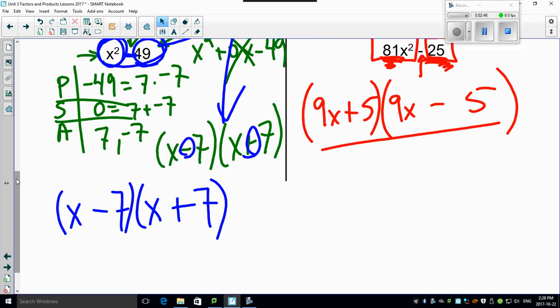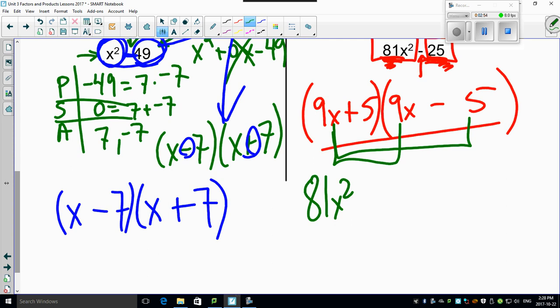And if you don't believe me, check this out. 9x times 9x is 81x squared. 9x times minus 5 is minus 45x. Look at how this turns out to be a term that is the same but opposite angles. That cancels with that,